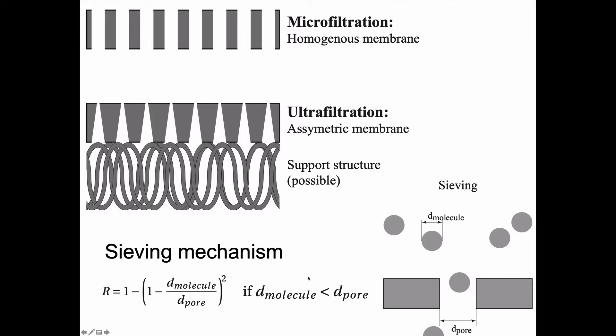If the molecule diameter is less than the pore diameter, the sieving mechanism is often what can be used to describe what actually happens here. So the retention is 1 minus (1 minus d_molecule/d_pore) squared. Some of the molecules will not have time to actually pass through while this flow is flowing across the membrane.